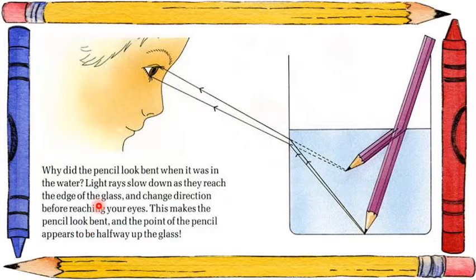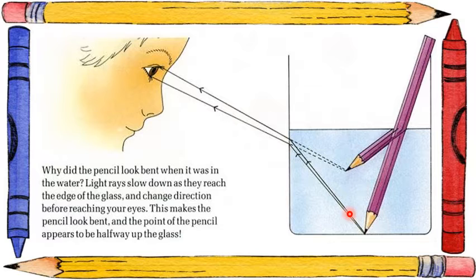So here we can see what we have learnt. Light travels in a straight line, but when it travels from one clear substance to another, it bends the direction. Also, light is the fastest thing in the world, but when it travels through water the speed slows down, which is why it can change direction. So two key things: light slows down when it travels through water, and light bends when it travels from one clear substance to another.